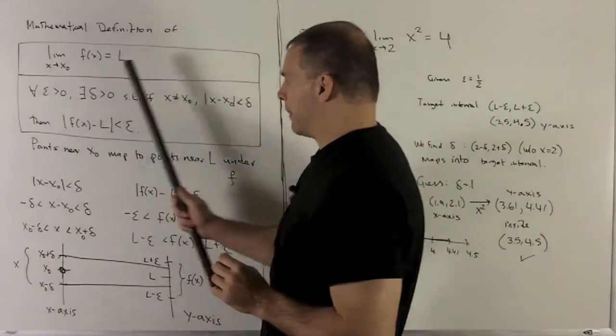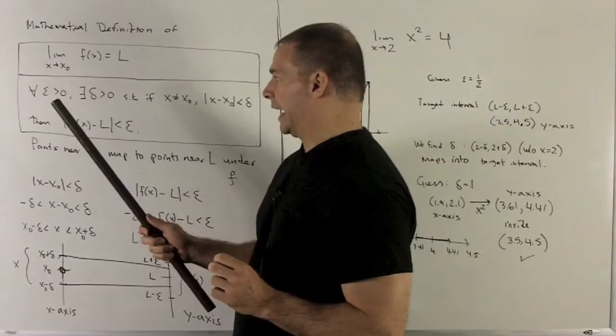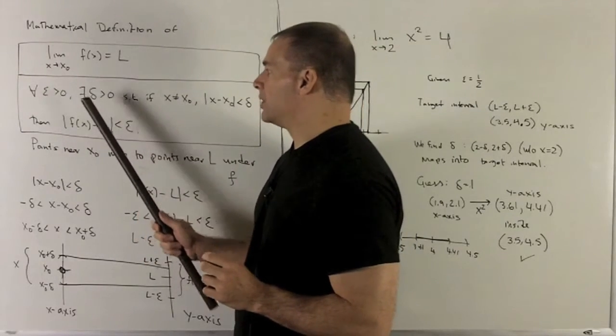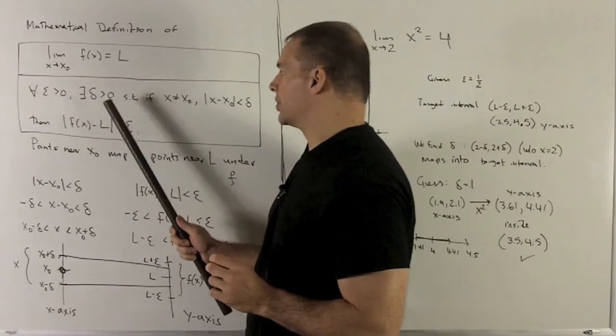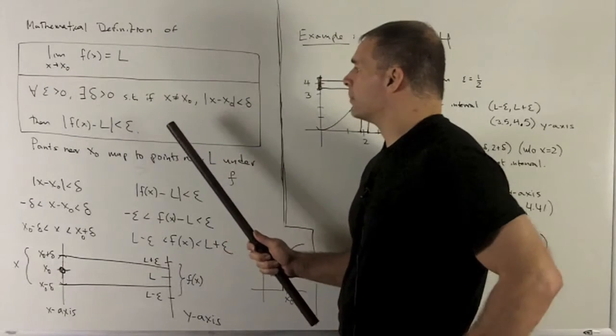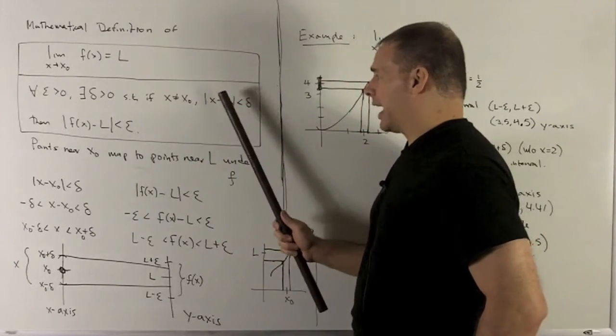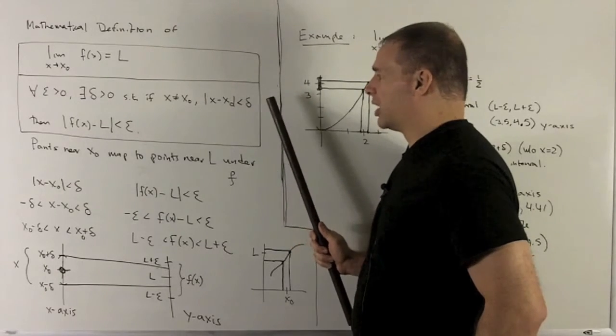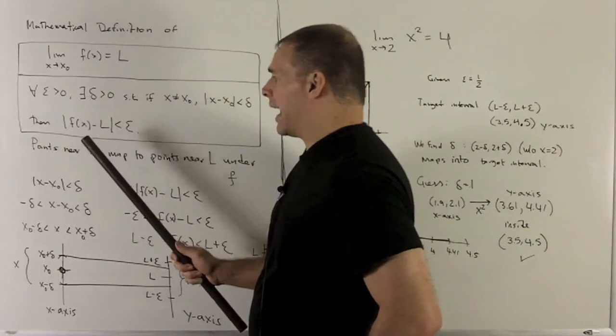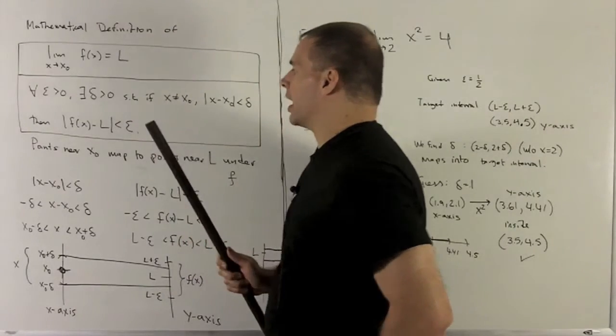We read this as, in mathematical terms, for all epsilon bigger than 0, there exists a delta bigger than 0, such that if x is not equal to x0 and absolute value of x minus x0 is less than delta, then the absolute value of f(x) minus L is less than epsilon.